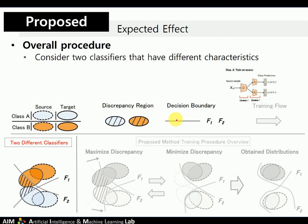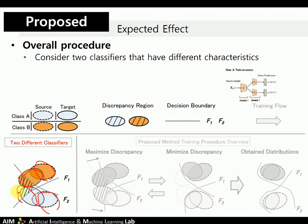We can explain this training procedure with diagrams. Source feature samples are enclosed by a dashed line and target feature samples by a normal line. The blue area means class A and the orange area means class B. The area with black lines represents the discrepancy region that misclassifies target sample labels. When we train two classifiers and the generator to classify source samples correctly, we can consider two classifiers F1 and F2 that have different characteristics. There is an existing discrepancy region for each classifier.